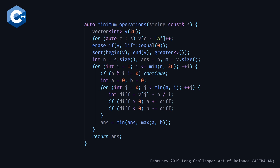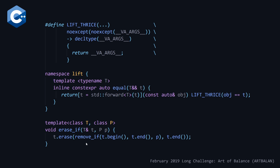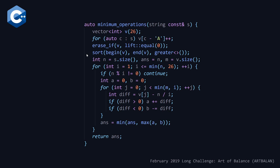Once we've built the frequency vector, we use an erase-if which implements the remove-if erase idiom. The lift-equal function object is from a library by Roel Bear, who gave a talk at Meeting C++ on functional programming — I'll link to both his GitHub repository and the video in the description below. This call removes all elements in our vector with a count of zero, i.e., characters that didn't appear in the string. Then we reverse-sort our array as discussed.